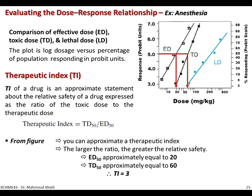If you are comparing two drugs acting on the same target, and one has a TI of 3 and another has a TI of 5, the one with TI of 5 is more effective and safe. This is how you can approximate a therapeutic index from the dose-response curve.